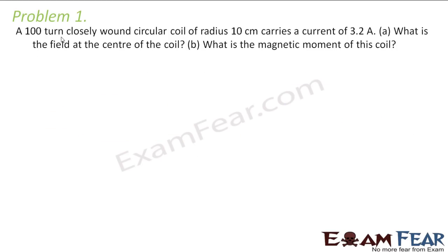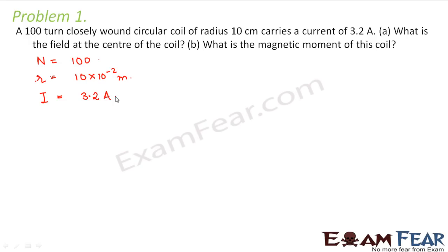It says that a 100-turn closely wound circular coil of radius 10 centimeters carries a current of 3.2 amperes. So total number of turns is 100, radius is 10 centimeters (10 × 10⁻² meters), and current is 3.2 amperes. We have to calculate the field at the center of the coil — there are 100 turns of a circular coil carrying a current of 3.2 amperes.